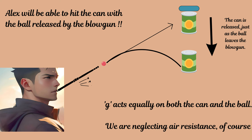Let us now come back to our first question involving the blowgun. Do you know the answer — will Alex be able to hit the can with the ball? For simplicity, assume there is no gravitational force: if g is zero, the ball will hit the can without any problem. Now bring back earth's gravitational pull — gravitational pull will act on both the can and the vertical component of the ball in projectile motion equally.